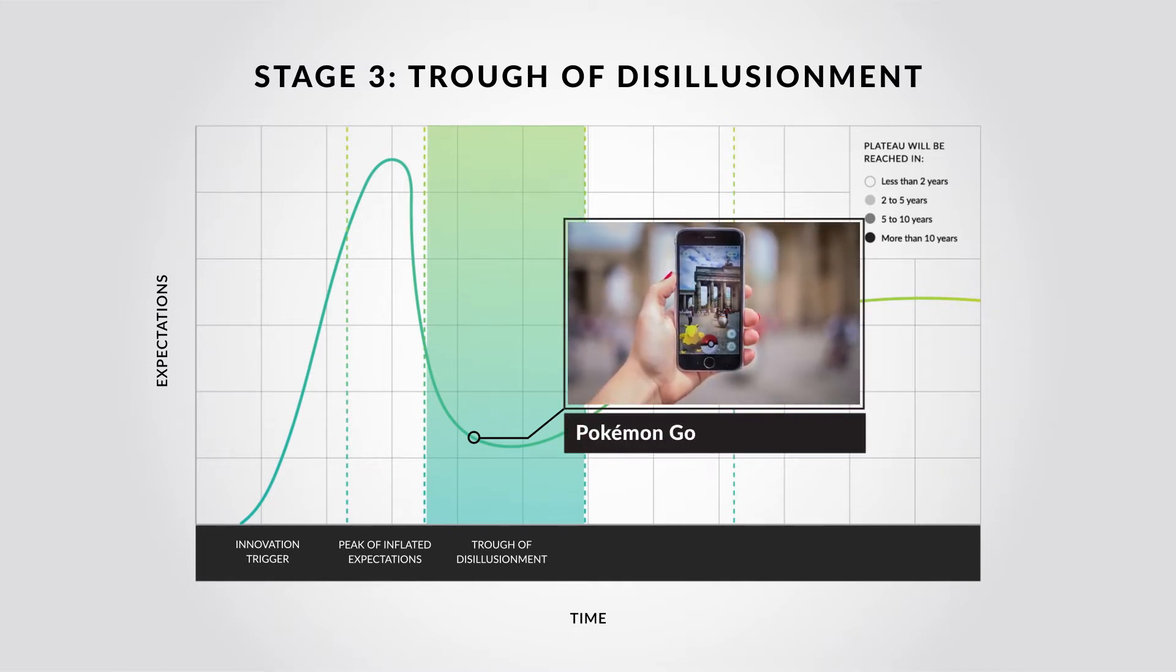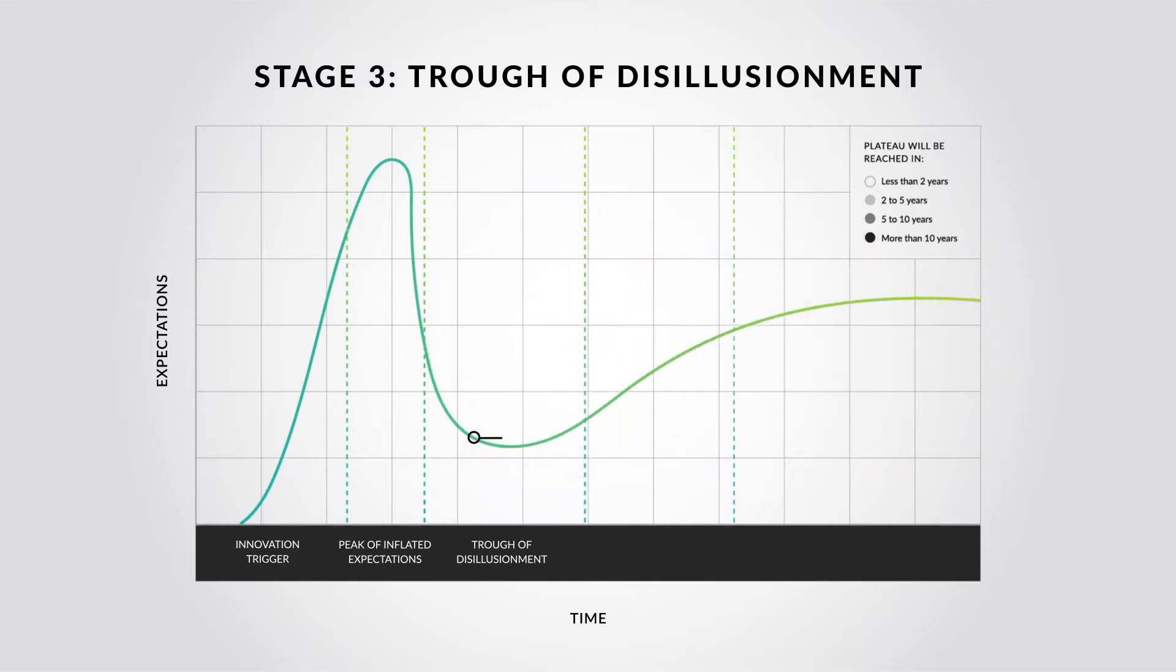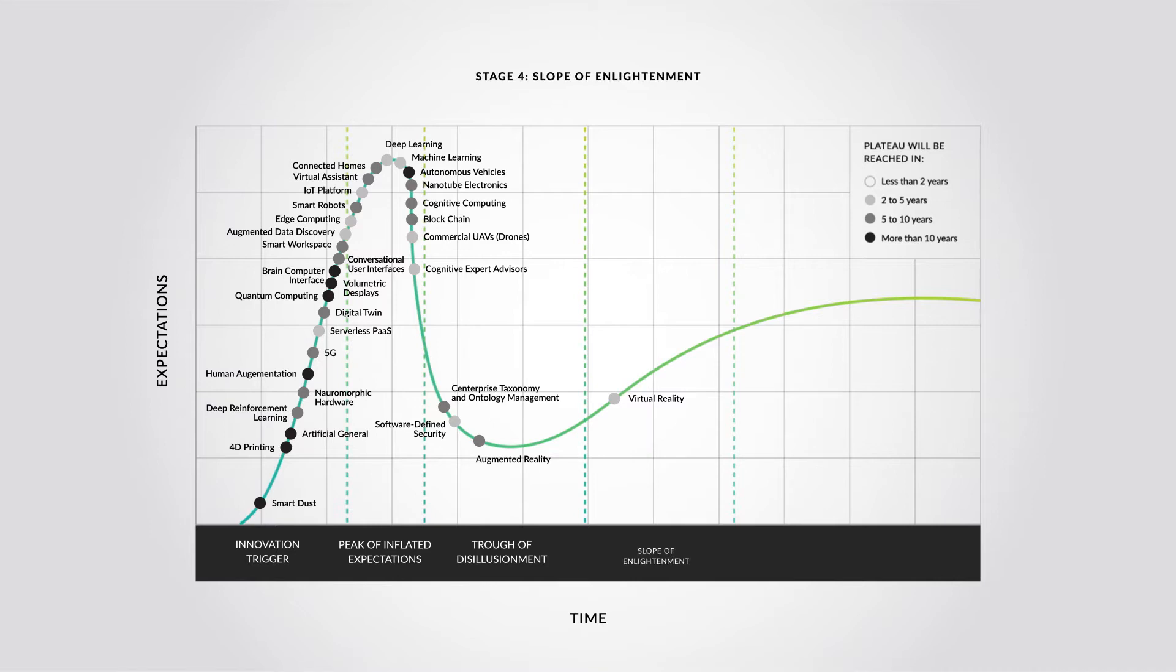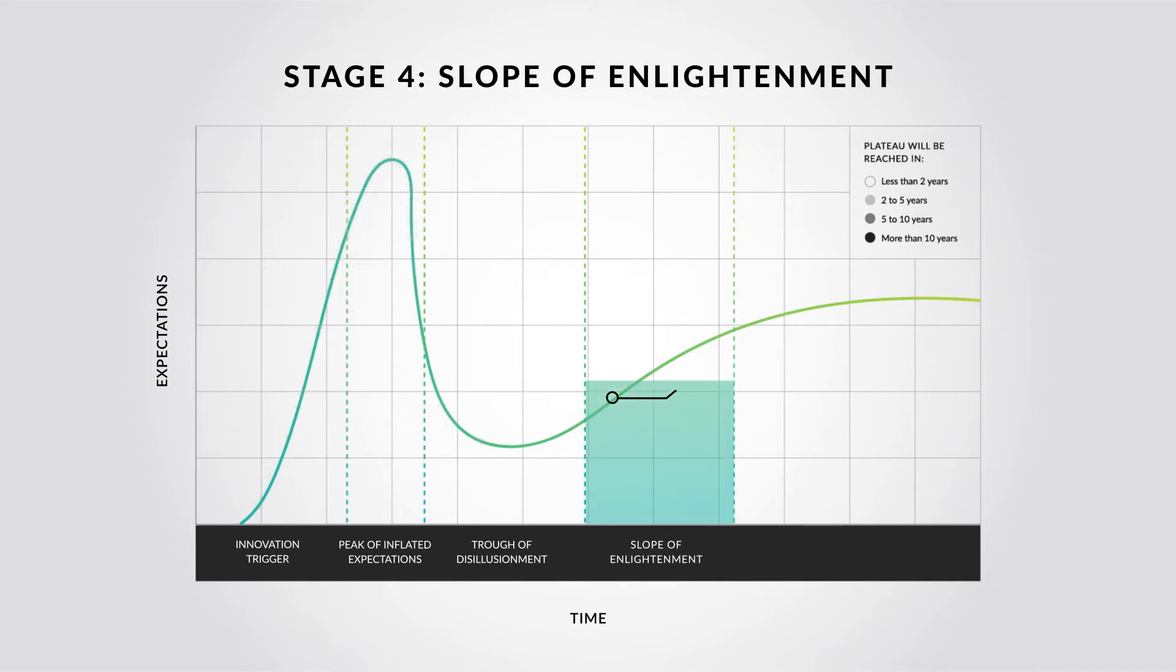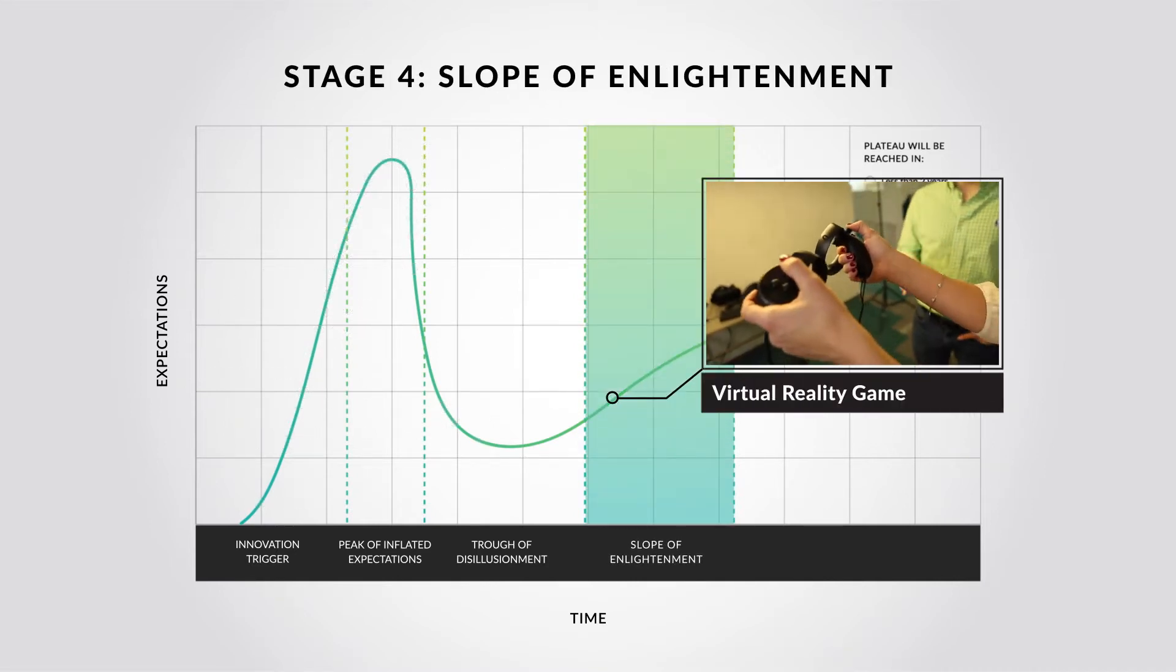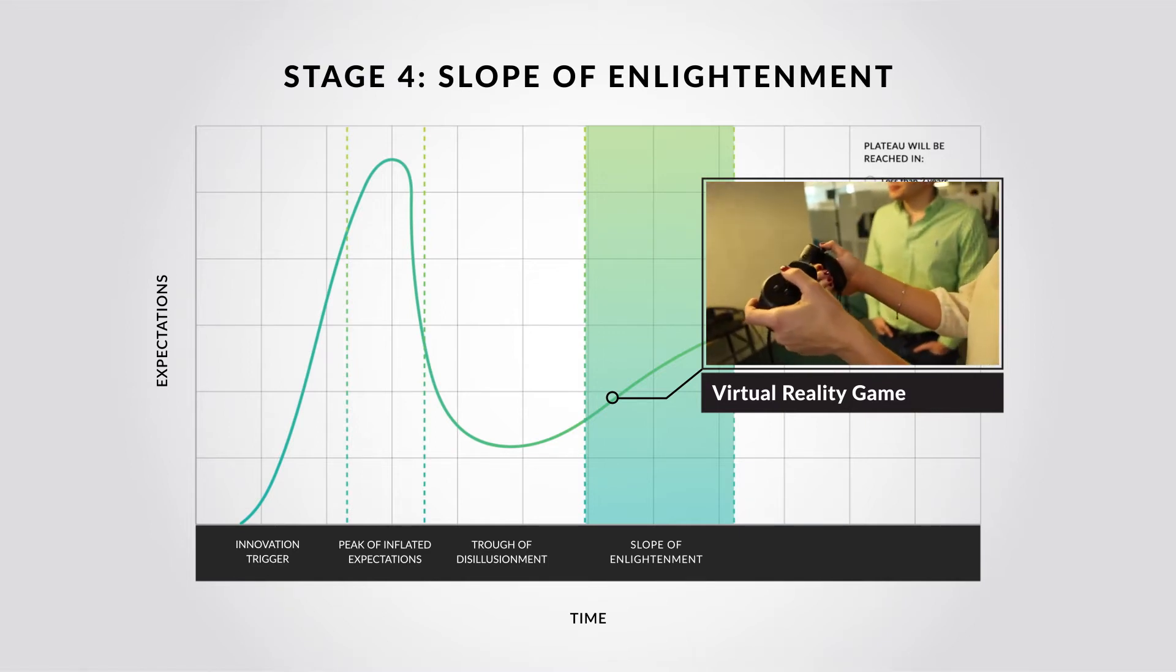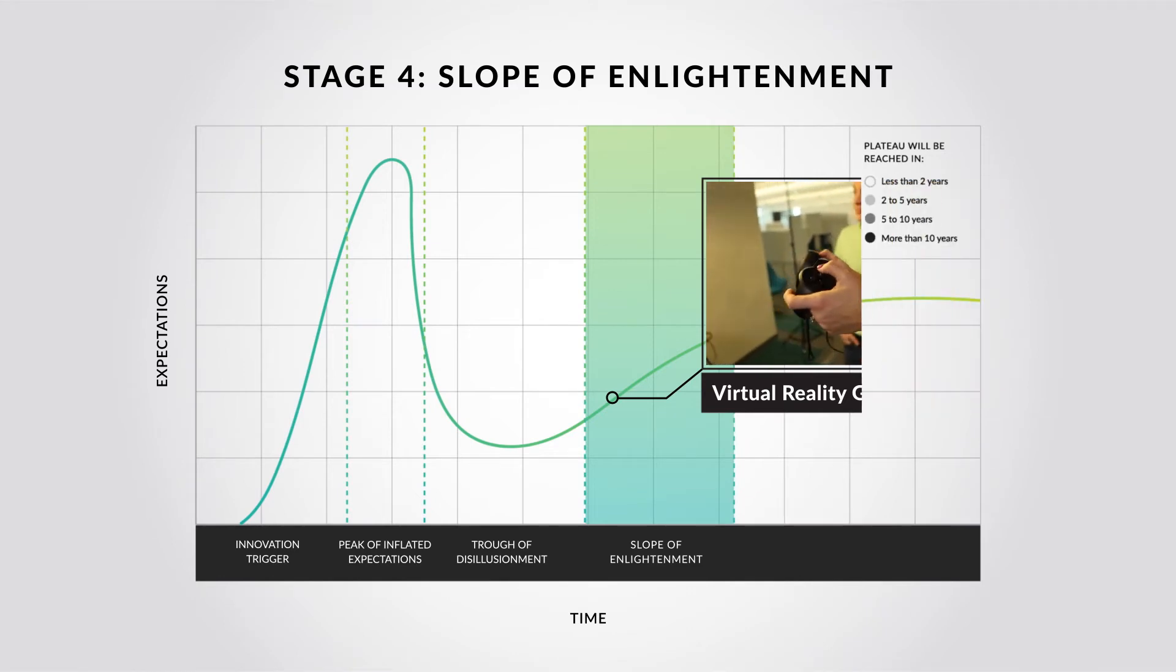As things quiet down though, the new technology can slowly gain real traction. This change is the slope of enlightenment. Virtual reality is here now. Improvements are made. More people use the new technology. The world starts to understand its purpose.